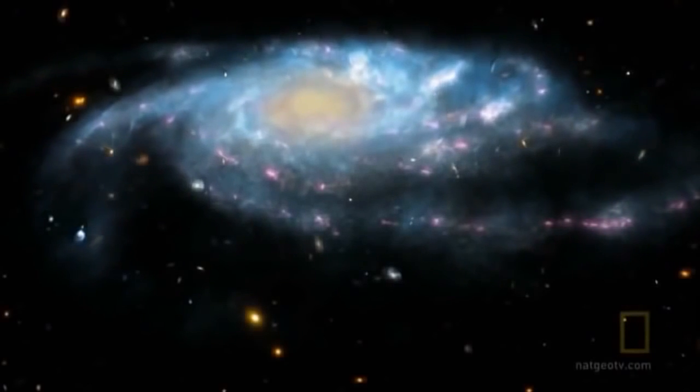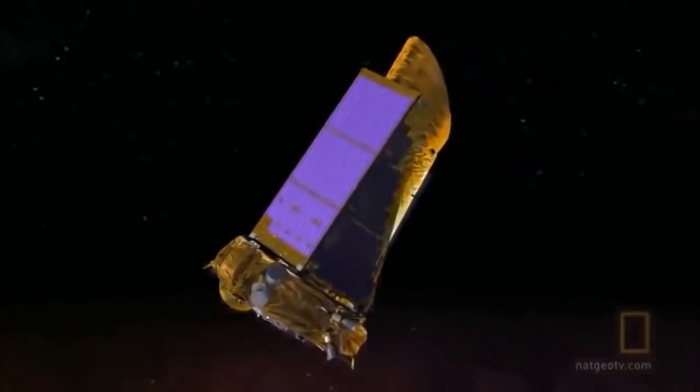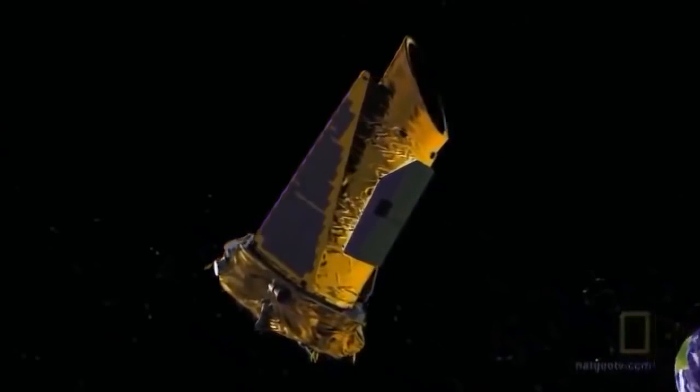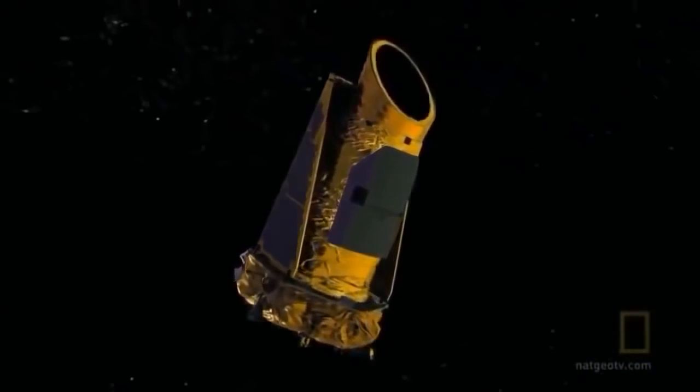We think that essentially every star has several Earth mass or super-Earth mass planets. So if you have, say, 200 billion stars in the galaxy, that may mean there are 400 billion Earths in the galaxy or more. 400 billion Earths. The Kepler Space Observatory is the first instrument capable of finding one of these planets.